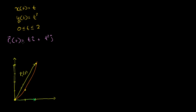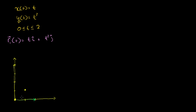That's the first parametrization. Let me draw it a little more carefully — I want a clean drawing. So it's going to be a parabola, part of my parabola, that looks something like that. That's the first parametrization.